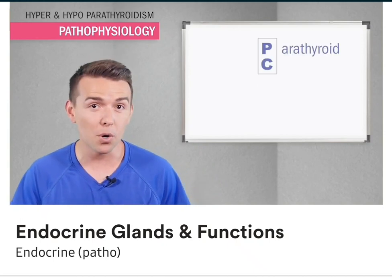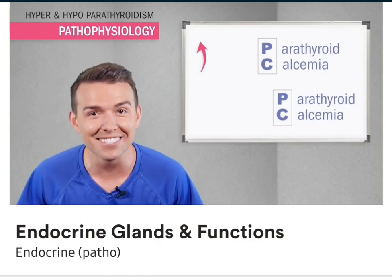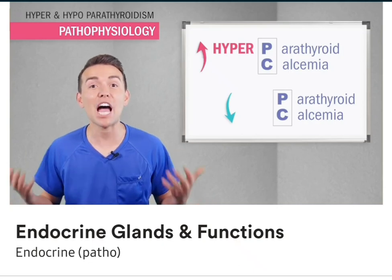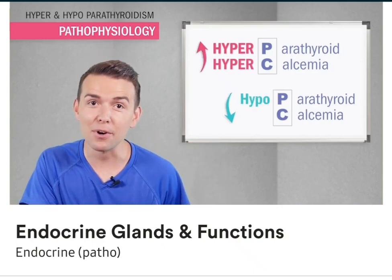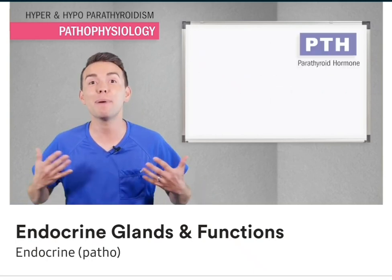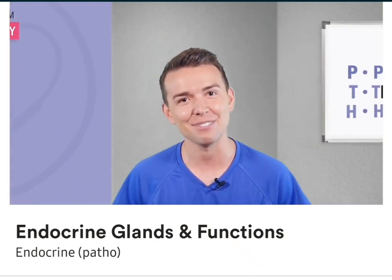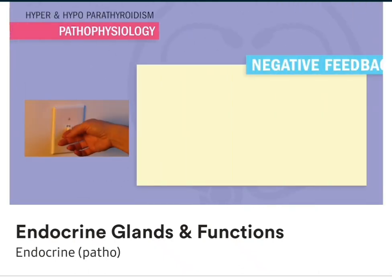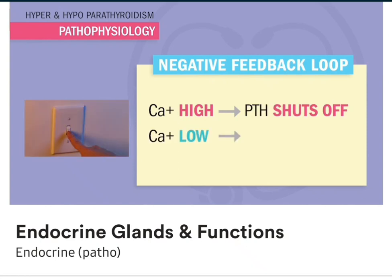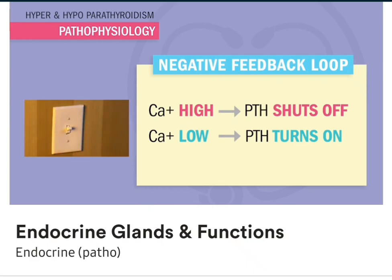If the parathyroid hormone is high, that means calcium is high. And when the parathyroid is low, calcium is low. So hyperparathyroid means hypercalcemia, and hypoparathyroid means hypocalcemia. PTH puts the calcium high. Think of a thermostat or a light switch — this is called our negative feedback loop. When calcium's high, PTH shuts off. And when calcium's low, PTH turns on. But remember, PTH puts the calcium high in the blood.